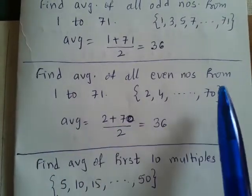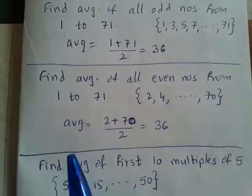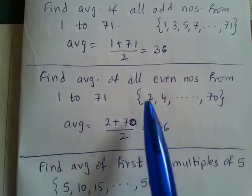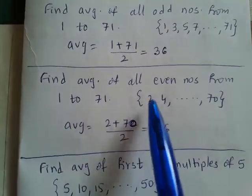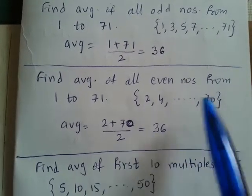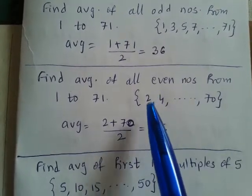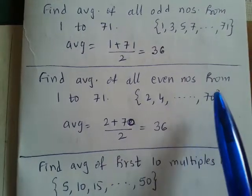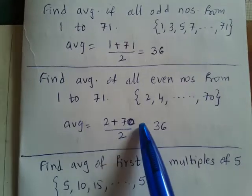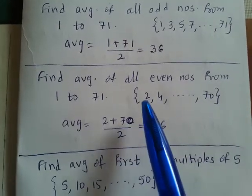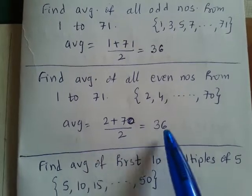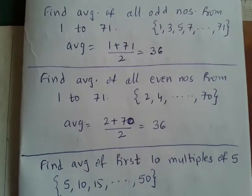Find the average of all even numbers from 1 to 71. Now these are even numbers in the range 1 to 71. It starts with 2 — 2, 4, 6 — and ends at 70. They are also equidistant with a common difference of 2. So the average is (first number + last number) divided by 2: (2 + 70) upon 2 equals 72 upon 2, that is 36.